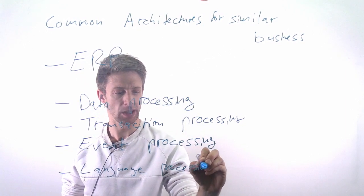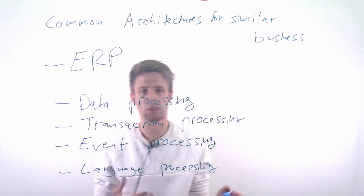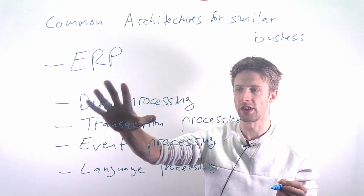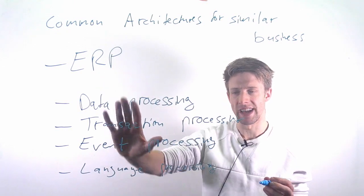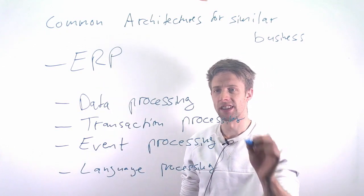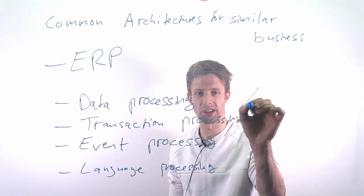There are examples for these in the book, so I won't go into much detail. But essentially, what you can do is try to figure out: is our business, is our product in any of these areas? And if yes, you can look at examples of how they do this - how do they do transaction processing, for example - and use it as a design checklist.